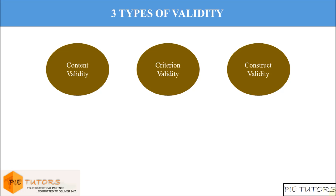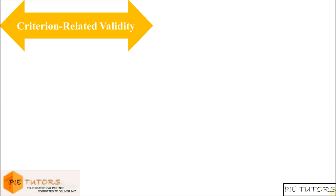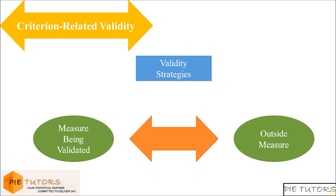The second type of validity associated with a measurement instrument is criterion-related validity. Criterion-related validity usually includes any validity strategies that focus on the correlation between the measure being validated and some well-respected outside measure.